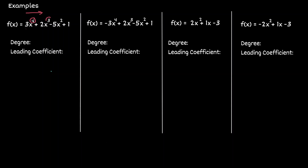We start with the exponent of four, then three, then two. There is no exponent of one, and then we have an exponent of zero — in other words, just a coefficient. What we're going to pay attention to is the leading coefficient term, or the term that has the highest exponent, which in this case is four. And in this term, notice that we have a degree of four, which is an even number. The leading coefficient is three, which is positive.